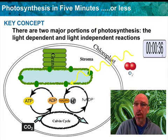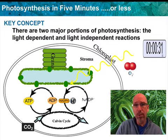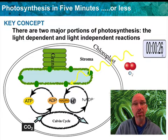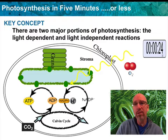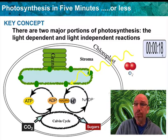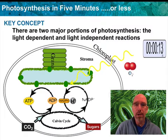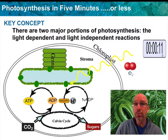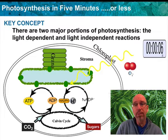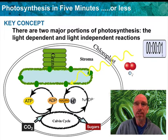That happens in the stroma — the space outside the thylakoid in the chloroplast. The chloroplast has two main parts: the stroma, which is kind of like the matrix in the mitochondria, and the grana with the thylakoid membranes, which are like the inner membranes of mitochondria. The eventual product is sugar molecules. What goes in? Carbon dioxide. What comes out? Sugars. What's the energy involved? ATP. The hydrogens from NADPH are used to add to the CO₂ to make C₆H₁₂O₆.